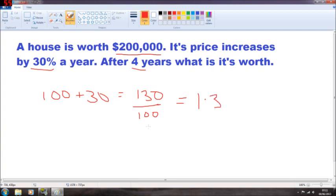And there you have your number that you times $200,000 with. So, 200,000 times 1.3. And because it rises after 4 years, we're talking about, you put a 4 here.